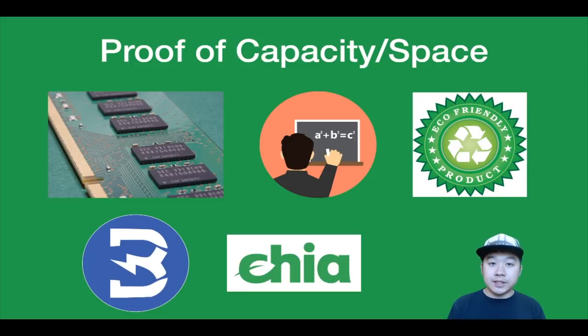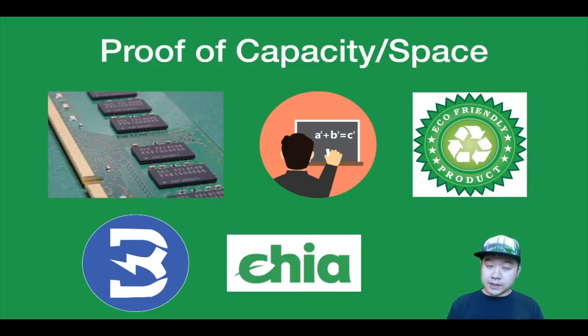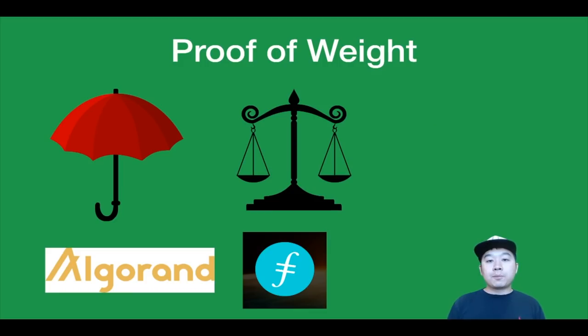It's pretty technical, but I'll let you look into that further yourself. Incentives may be a problem in these protocols. Projects that have utilized this approach include Burstcoin, Chia, and Spacemint.